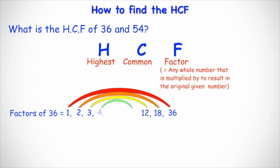Then we check: can 4 go into 36? If we divide 36 by 4 we get 9, so 4 times 9 equals 36 — the partner for 4 is 9. Can 5 go into 36? No, it cannot be divided exactly, so we skip that one. Then we check 6: can 6 go into 36? Yes — 6 times 6 equals 36.